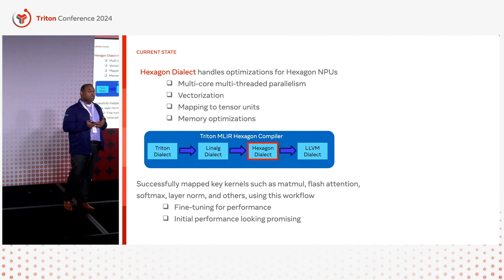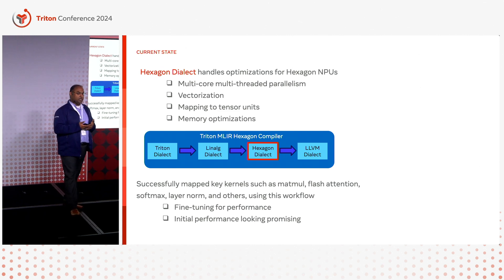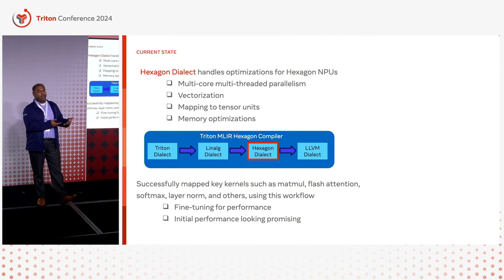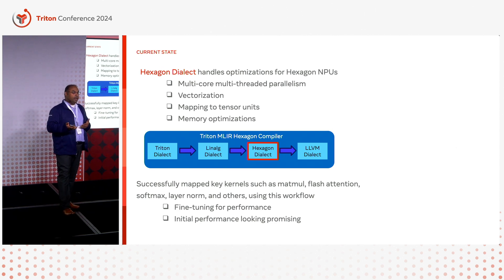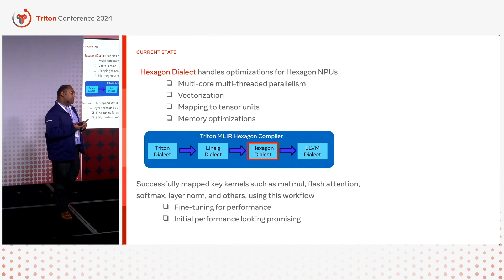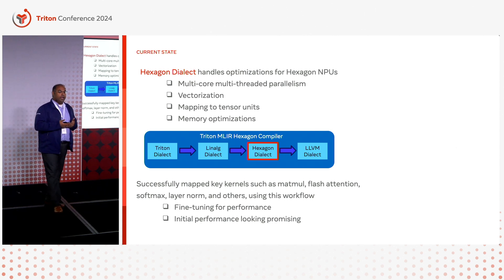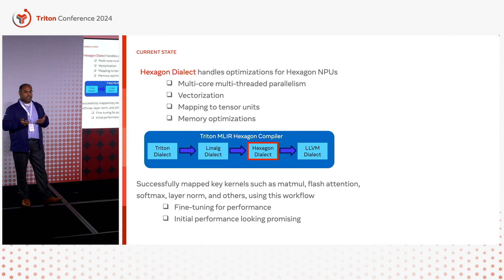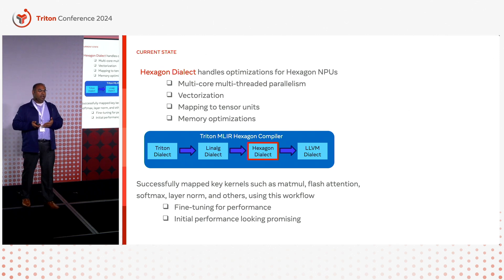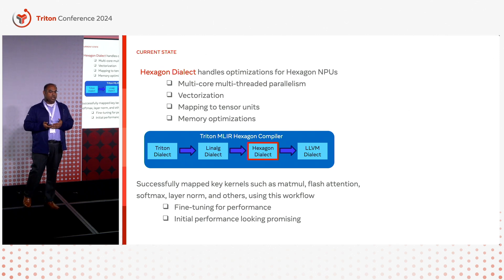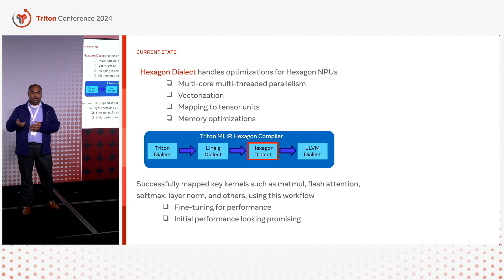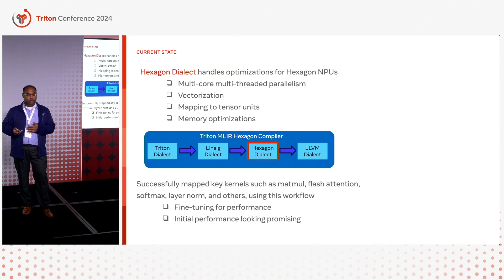The initial results look really promising. For some of the core element-wise kernels, the compiler-generated code is up to about 80% of the hand-optimized code. It's a good starting point, and as the features get complete and the end-to-end pipeline is finished, we want to publish and open-source our back-end to the community.